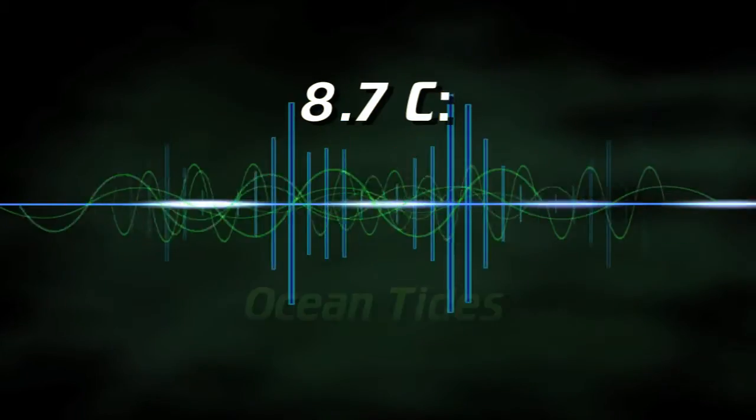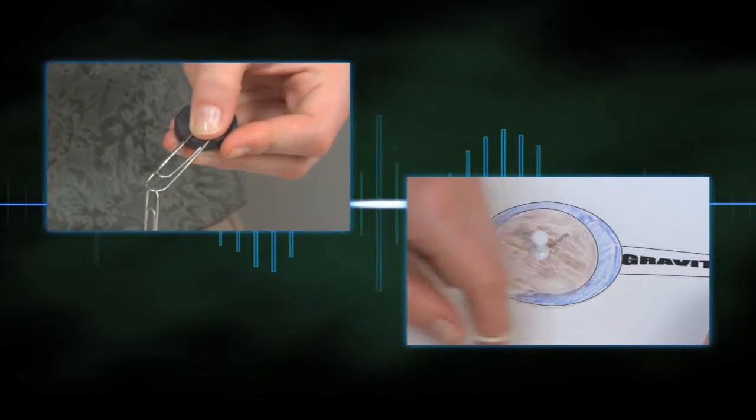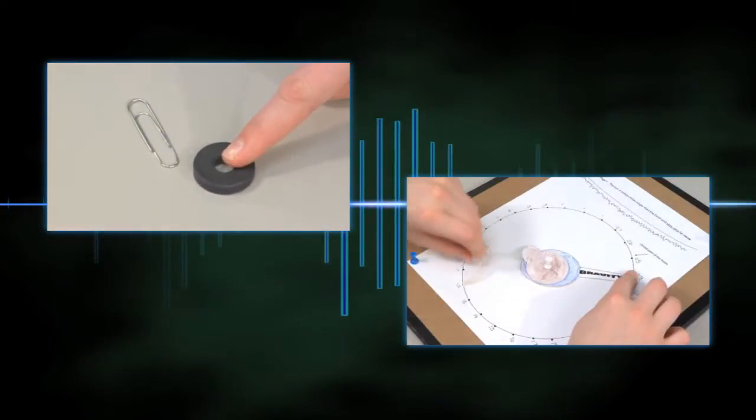8.7C – Ocean Tides. In this activity, students use various models to discover how the moon's gravitational force influences the waters on Earth.